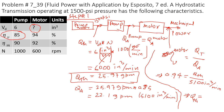From that equation, the theoretical flow by the motor is 4794 in³/min, or equivalently 20.75 gallons per minute. Now we know the theoretical flow by the motor.